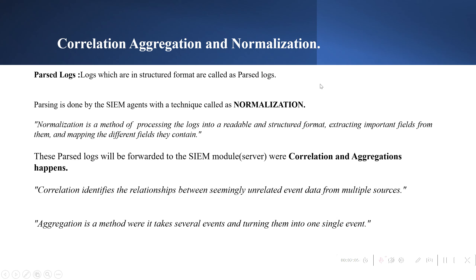From a SIEM standpoint, there are three main pillars: normalization, aggregation, and correlation. Normalization is the process of parsing raw logs into structured parsed logs. Correlation identifies relationships between unrelated event data from multiple sources, and aggregation takes several events and turns them into a single event.